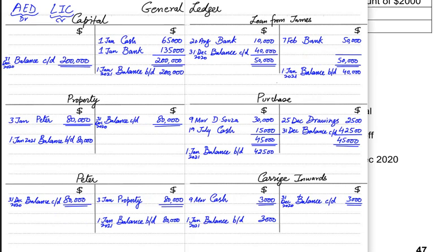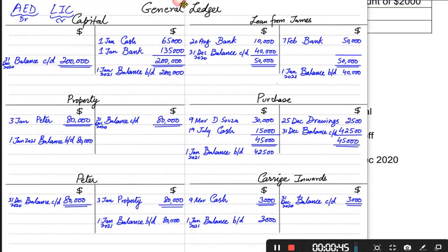After preparing all the T-accounts with the double entries, what we did was balance all these T-accounts. The shorter side was balance carried down and the greater, bigger side was balance brought down. Balance carried down was the closing balance and balance brought down was the opening balance. Once we have balanced all of the T-accounts, it's the right time to make a trial balance.